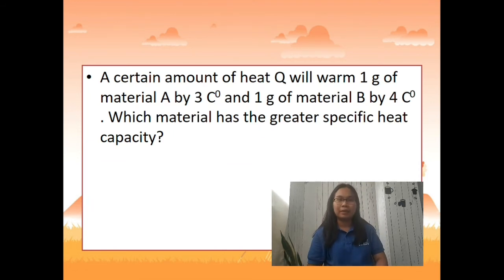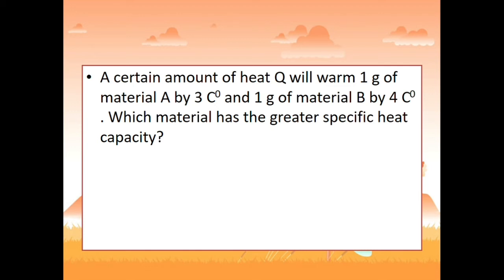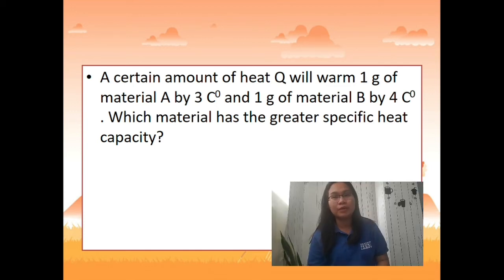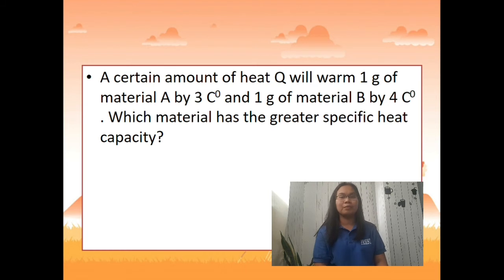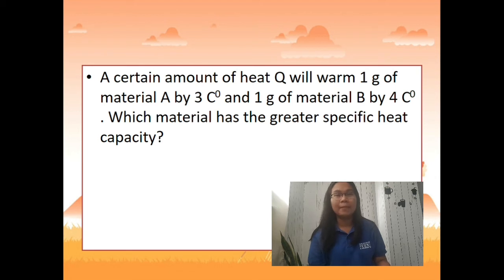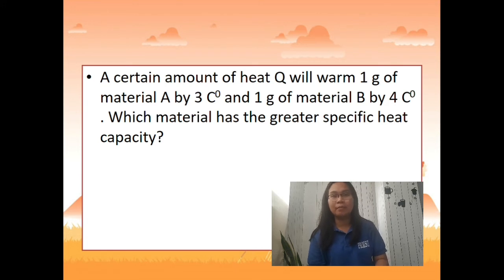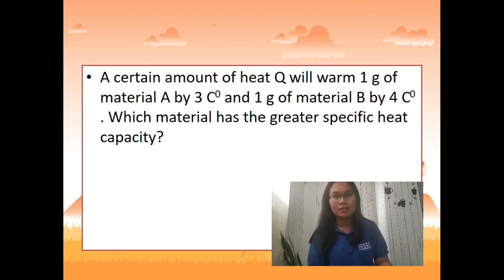Here is a sample problem: a certain amount of heat warms one gram of material A by 3 Celsius degrees and one gram of material B by 4 Celsius degrees — which material has the greater specific heat capacity? Both have the same mass, but material A increased its temperature by only 3 degrees while material B increased by 4 degrees. This means material A has higher thermal resistance and therefore higher specific heat capacity.